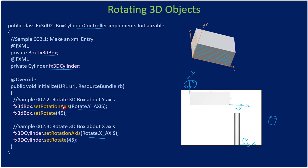So, for the box we are rotating it in the Y direction and for the cylinder we are rotating it in the X axis. Now we will go to the implementation.